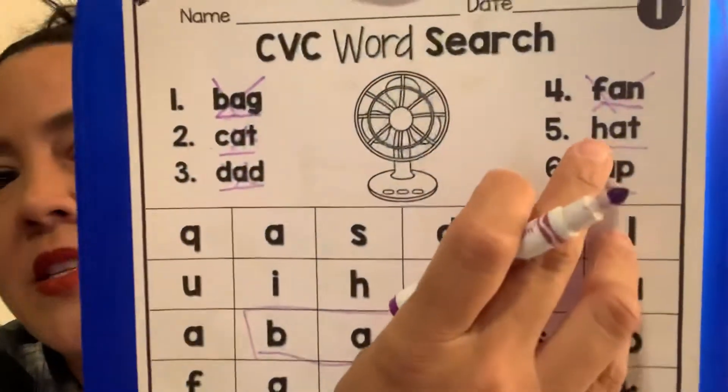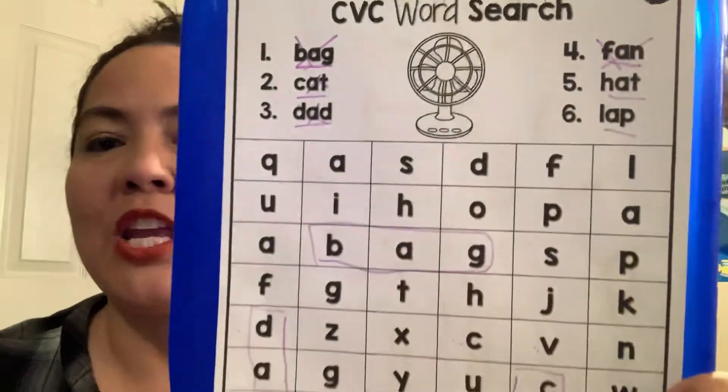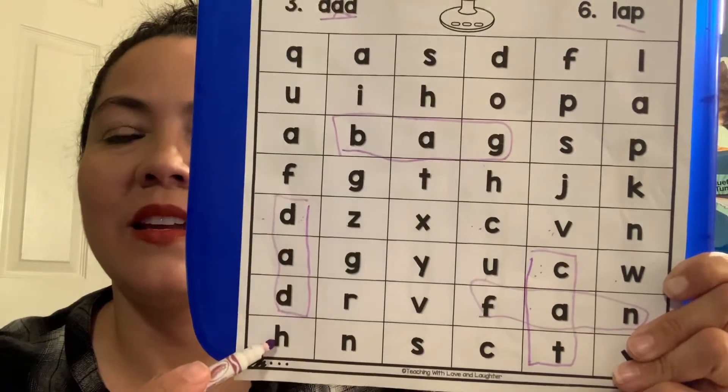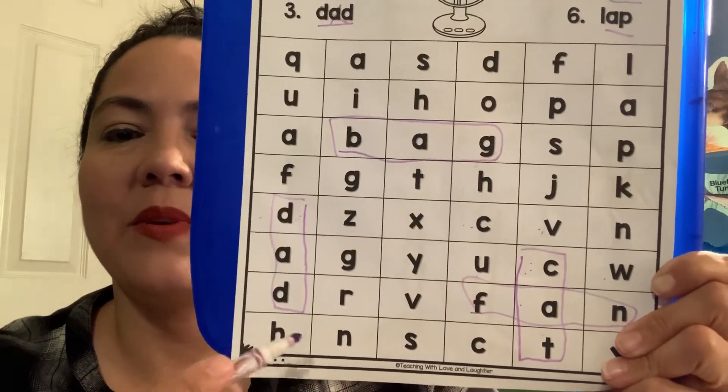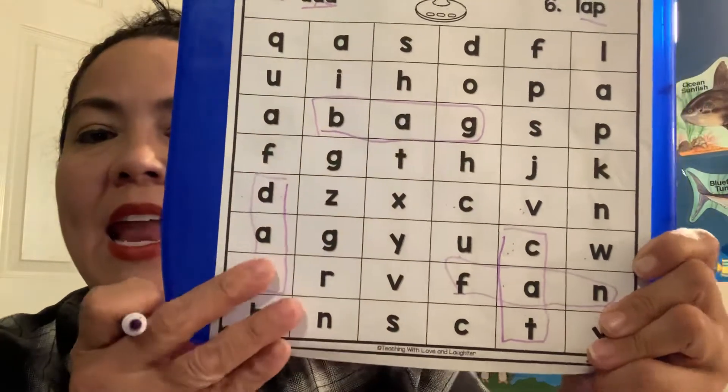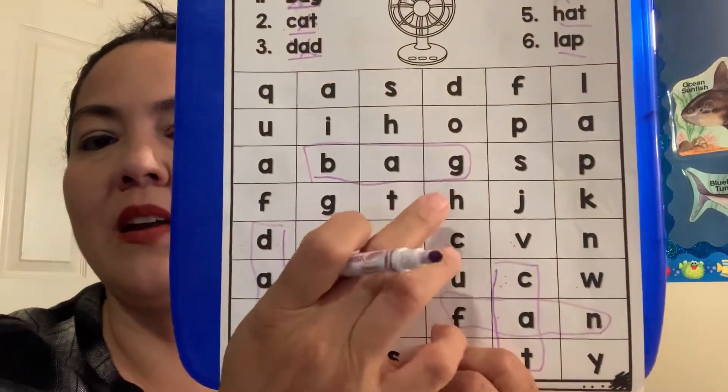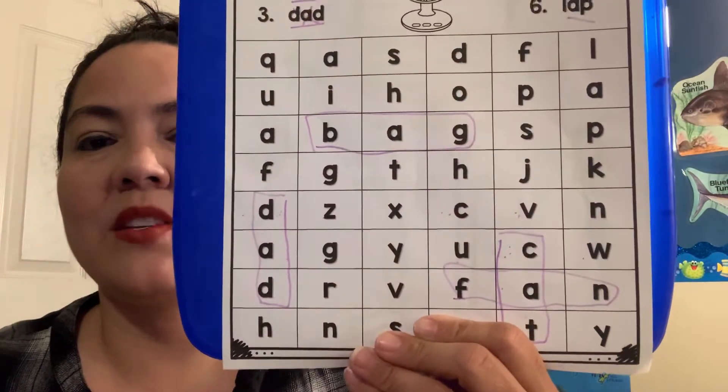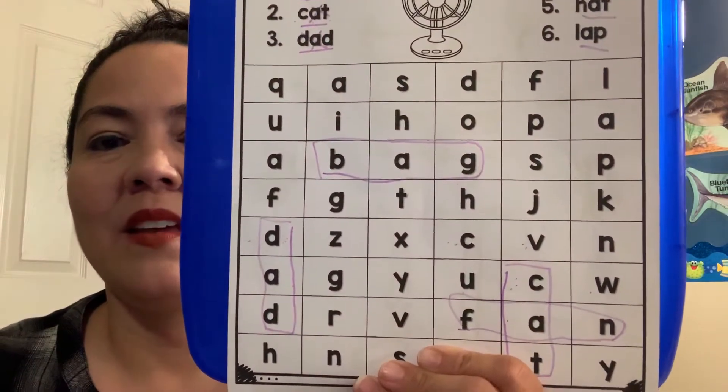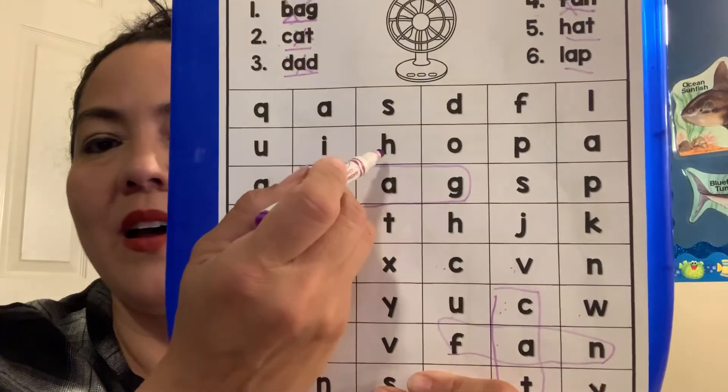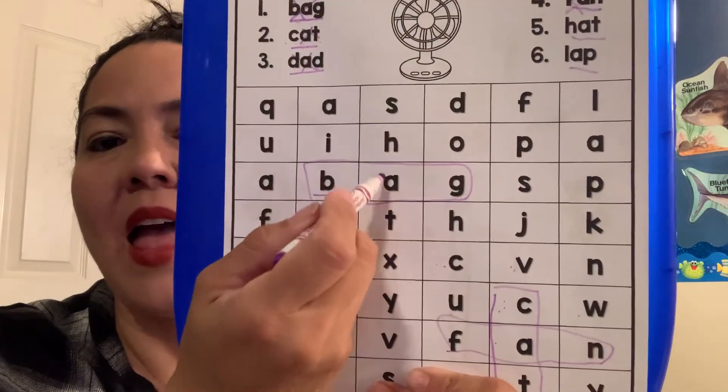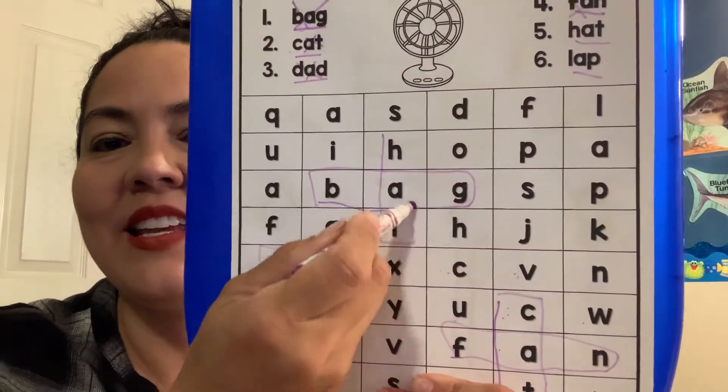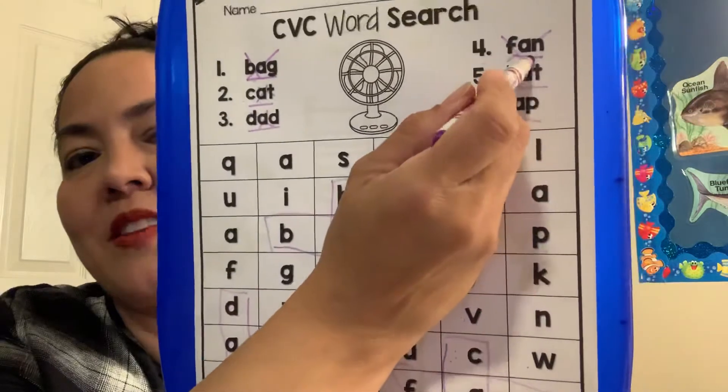The next word is h-a-t. Hat. Can you guys find hat? Let's find our h's. Do you see any h's? We have to find an h and then an a. So there's no a's around here. What about around here? H-a-t. No? Can we find another h somewhere? Oh. What about here? H-a-t. No? H-a-t. I found it. H-a-t. Good job, guys. Now we can cross off hat.